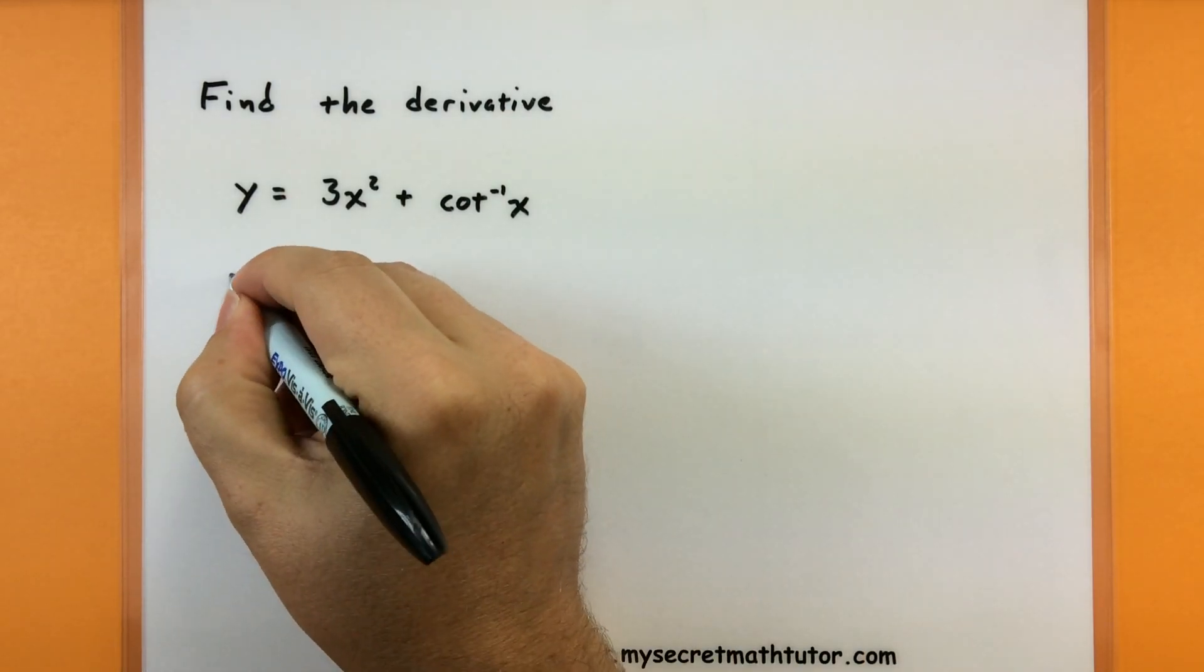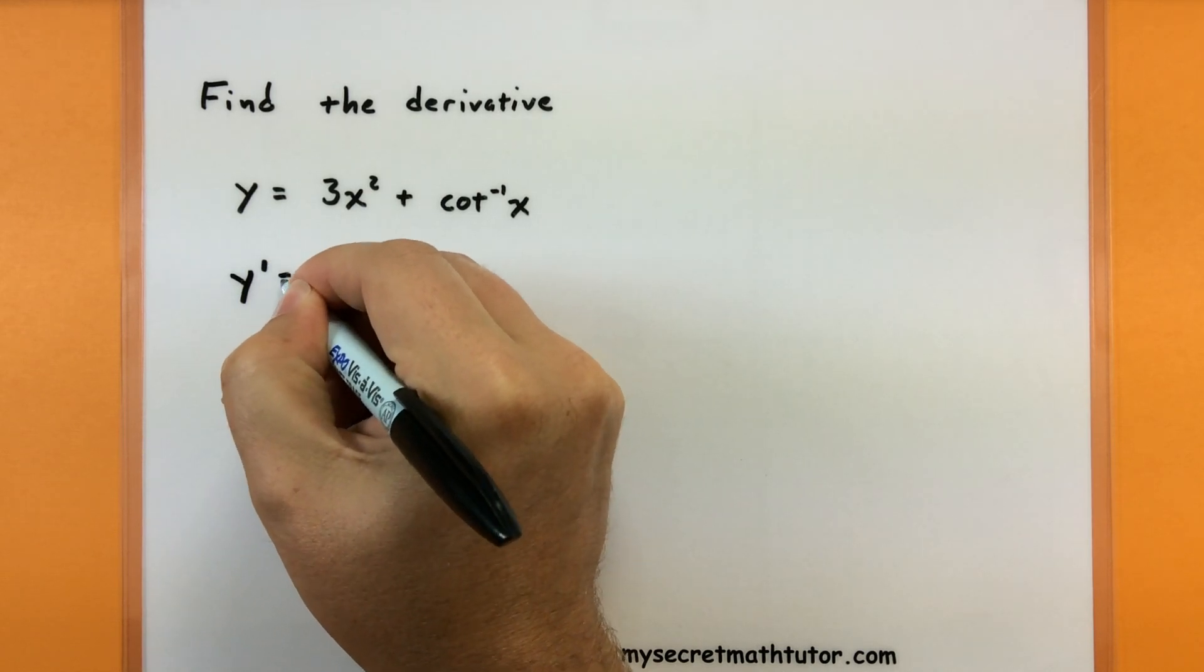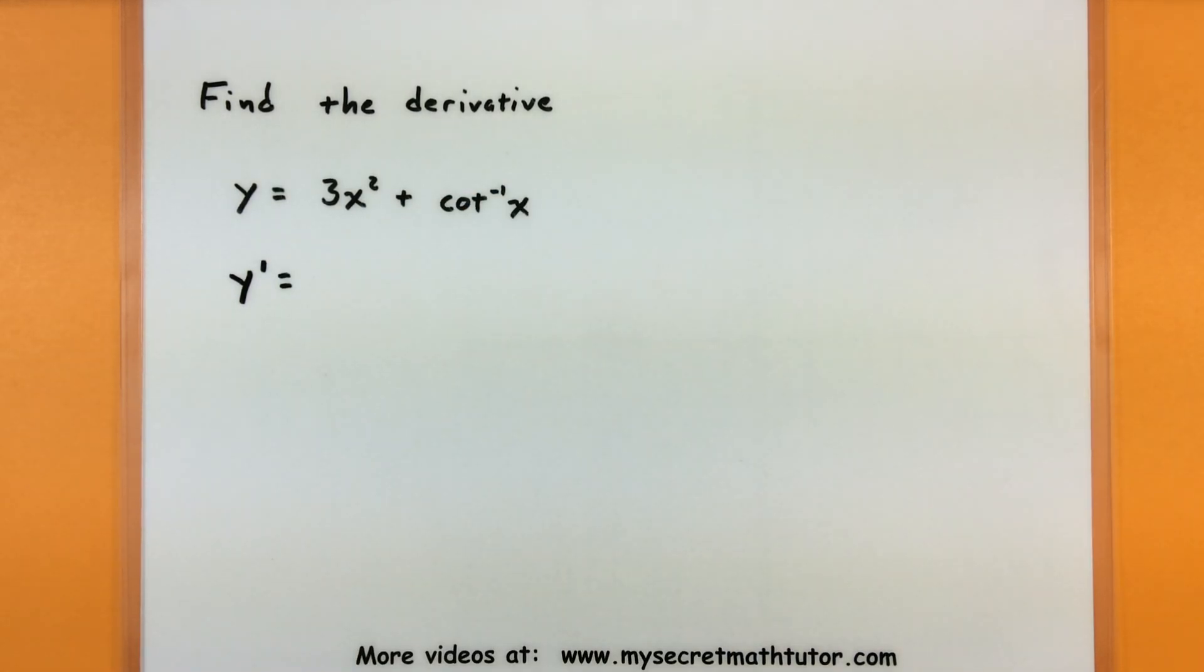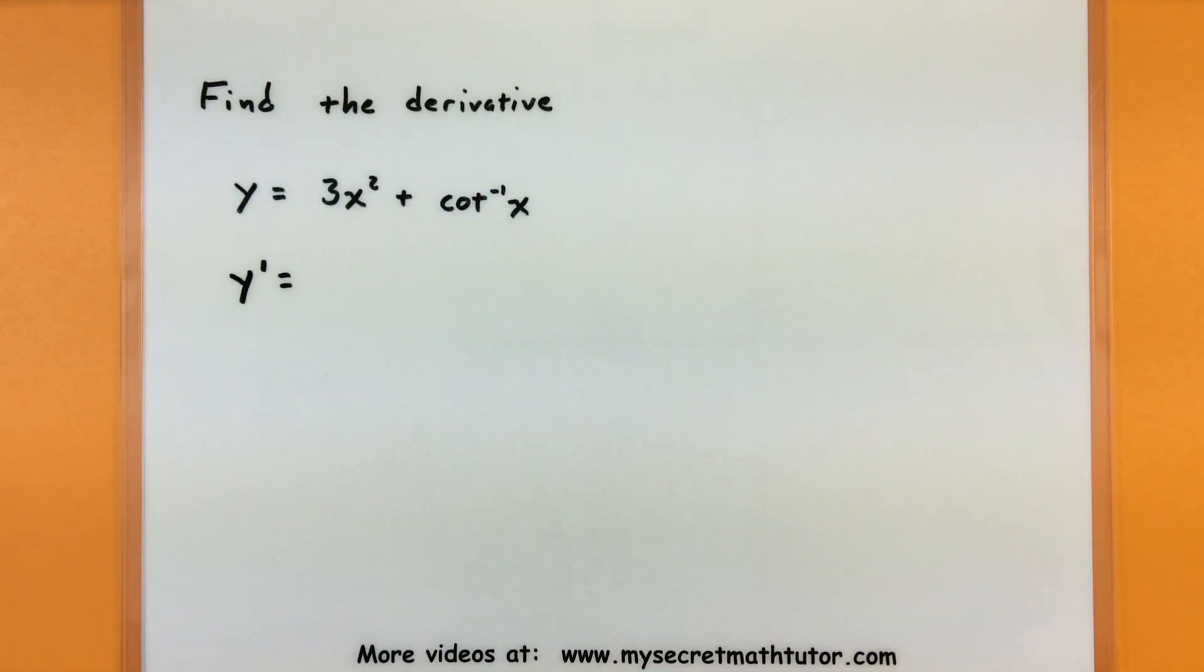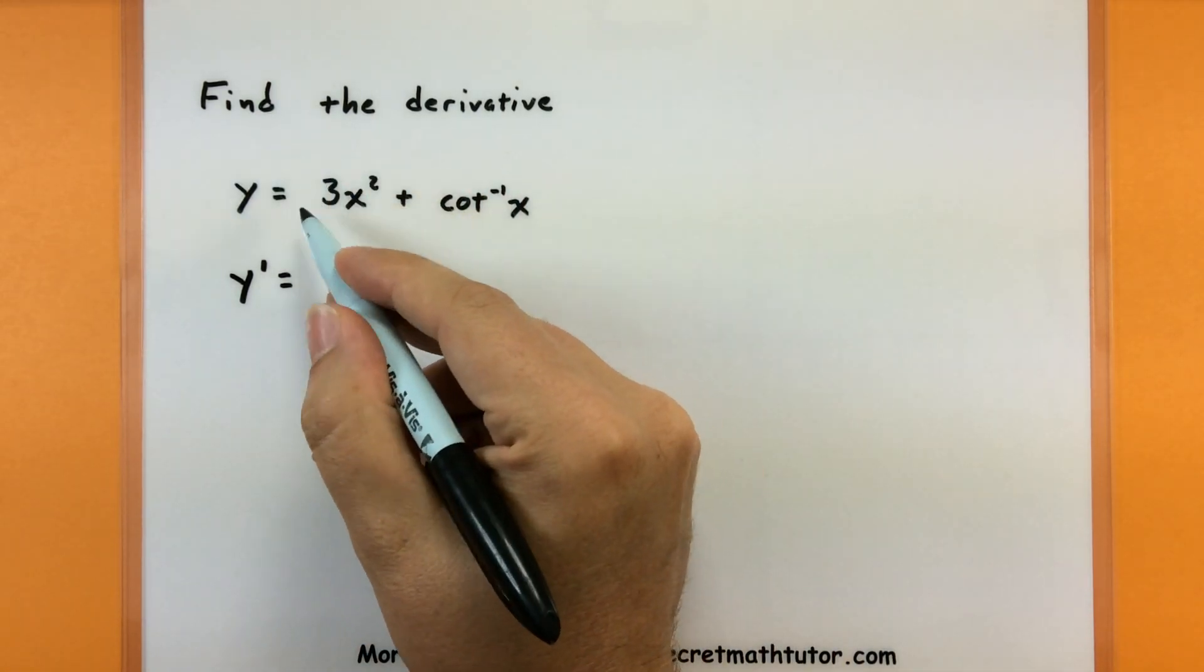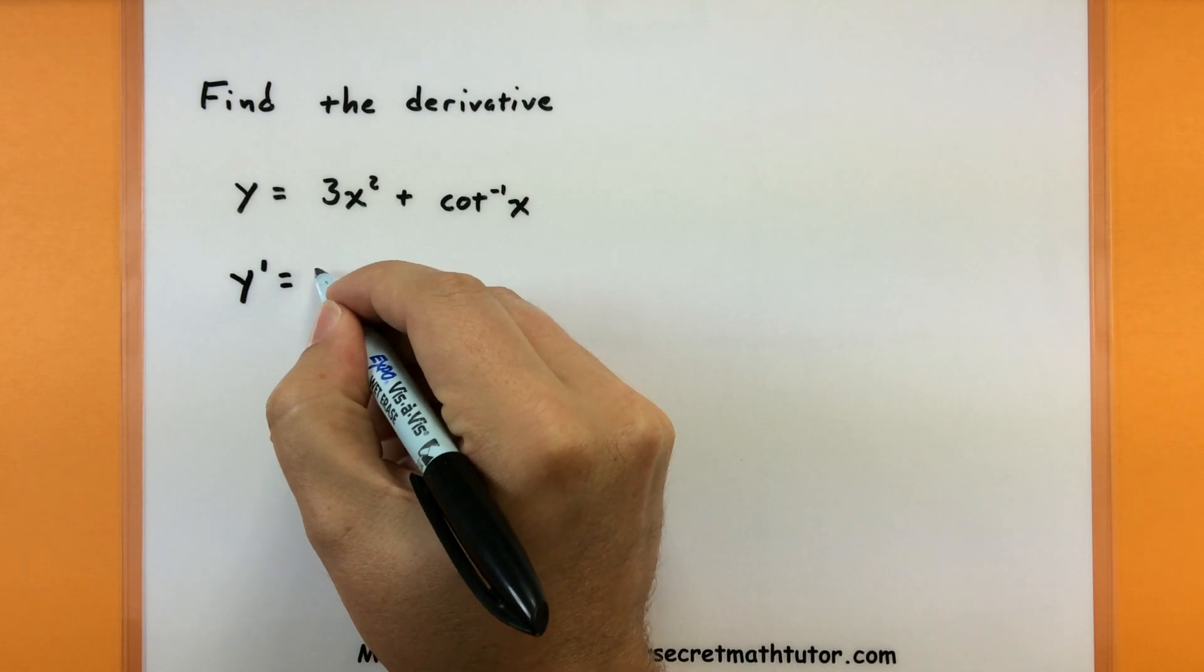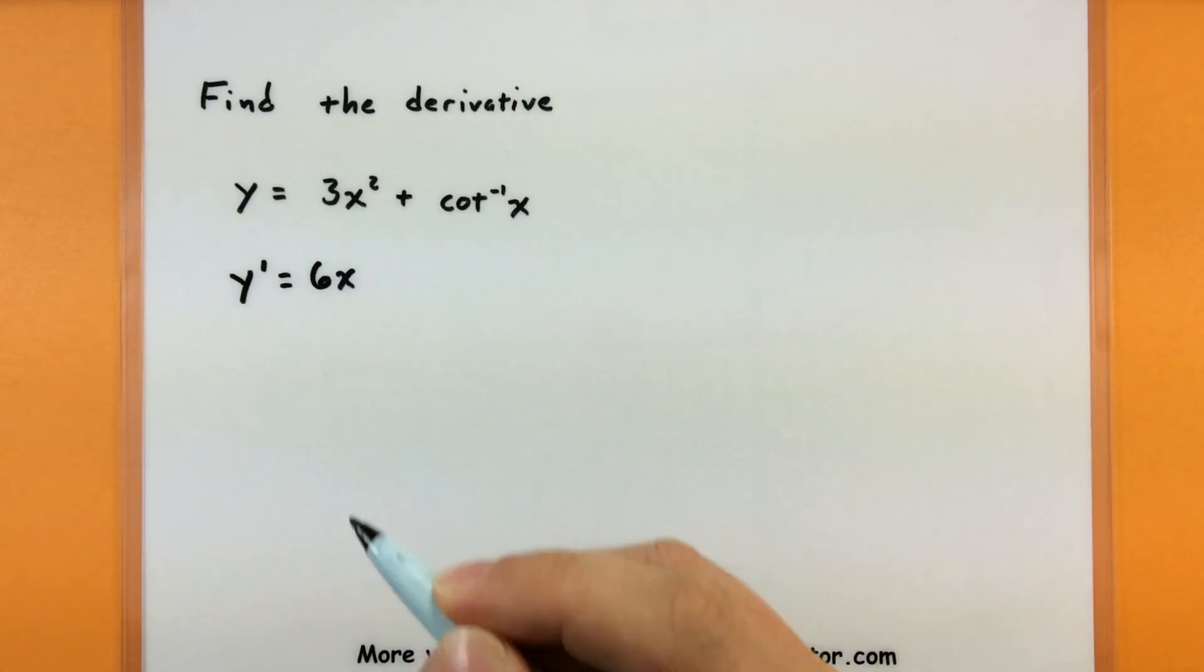Alright, so off I go to take a derivative. These derivatives really play well with the other derivative rules, so I'm going to take the derivative of 3x squared and then worry about the derivative of inverse cotangent. So first the derivative of 3x squared, that just gives us a 6x, no problem there.